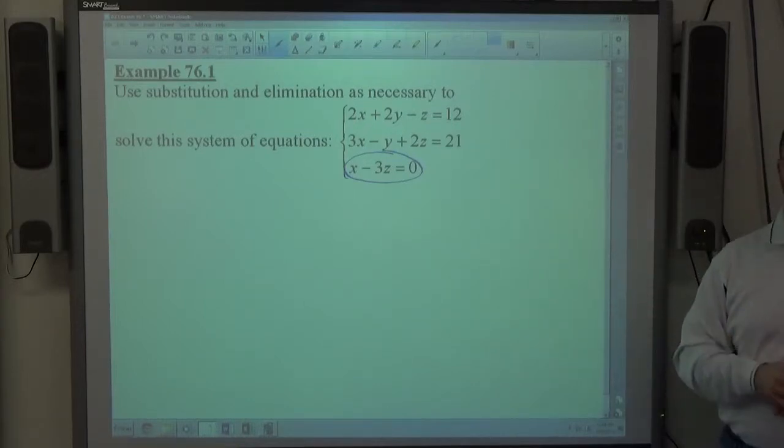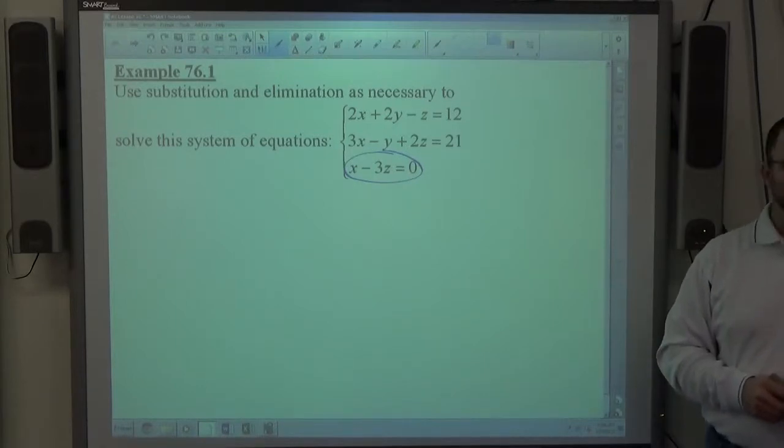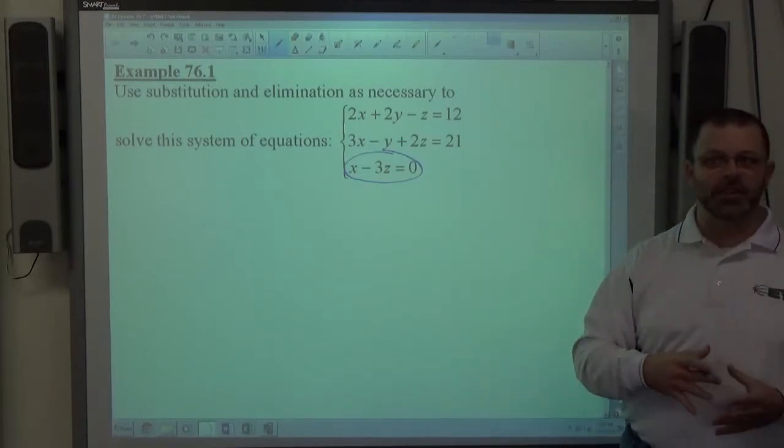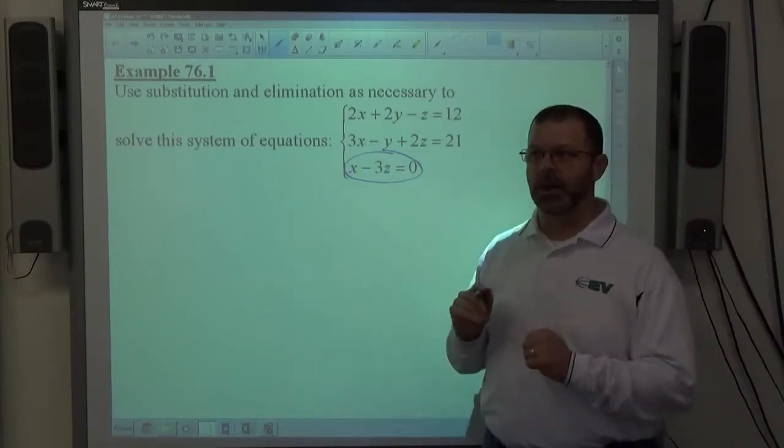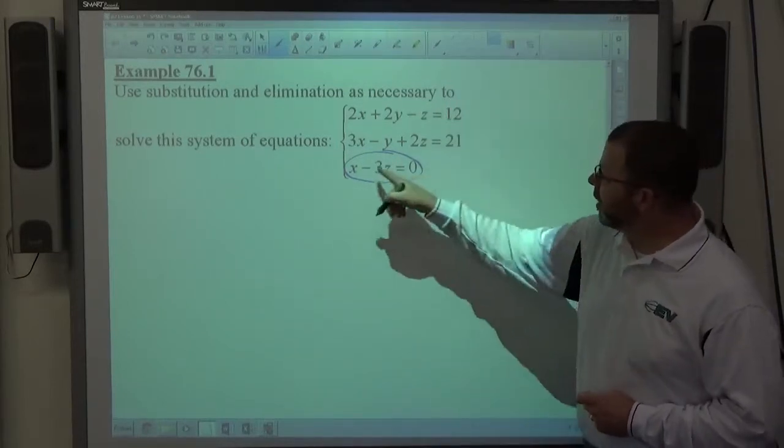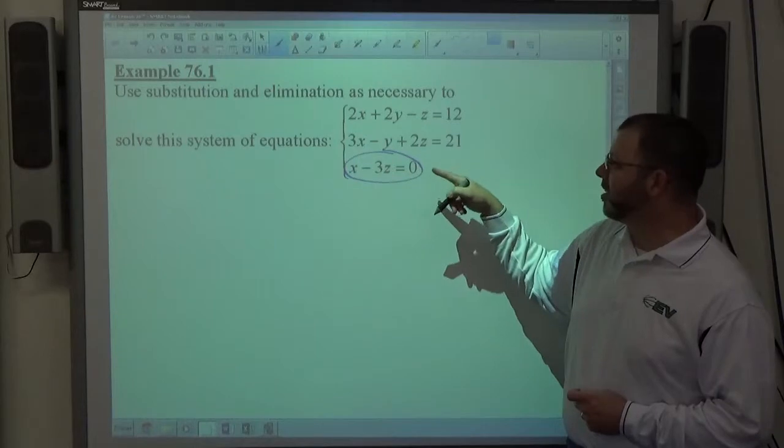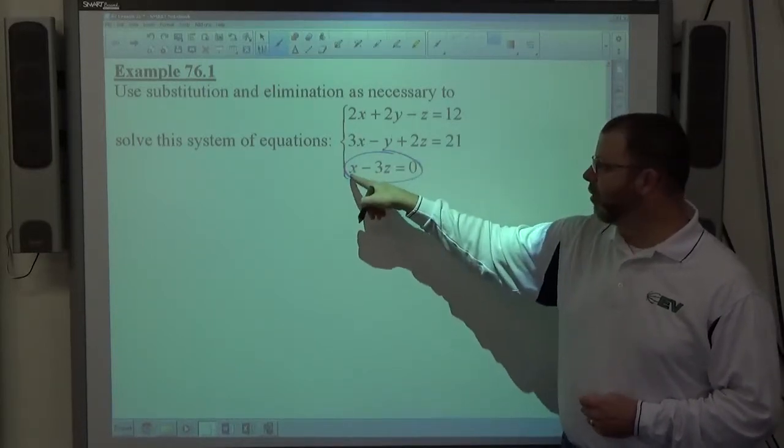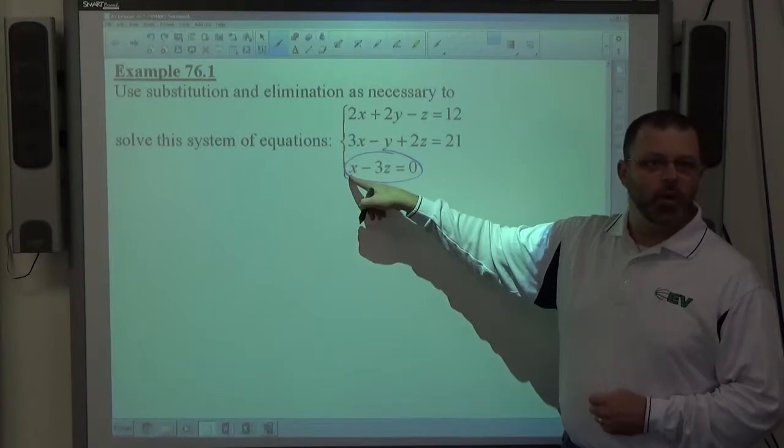everybody in here can do a system of two equations with elimination or substitution very easily. It's something we've practiced a lot, we've gotten good at. So what I want to do is I want to get myself to that level. I want to get myself out of this three-dimensional world into my two-dimensional world that I'm comfortable in. And the way we do this is we take one of these equations, it doesn't matter which one, but if it only has two variables, it's easier to work with that one. I'm looking for a one coefficient.